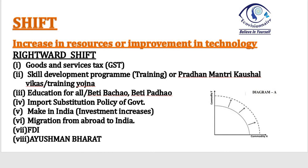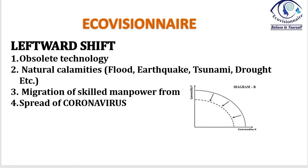For a leftward shift — which is just the opposite of rightward — the causes are: decrease in resources, destruction of resources, or deterioration of technology. Using obsolete technology reduces potential and production. Natural calamities that destroy property and resources lead to a leftward shift. Brain drain (migration out of India) leads to a leftward shift, as potential increases in another country and decreases in our own nation. Recently, the Coronavirus which caused death and destruction is another example — therefore a leftward shift.